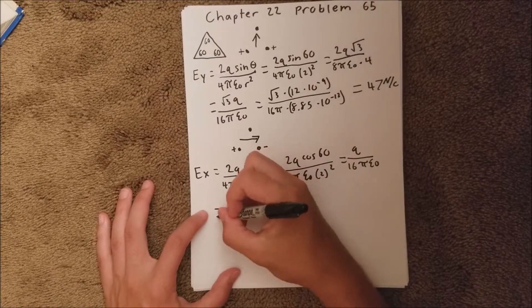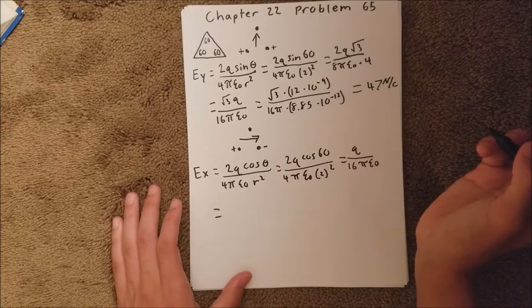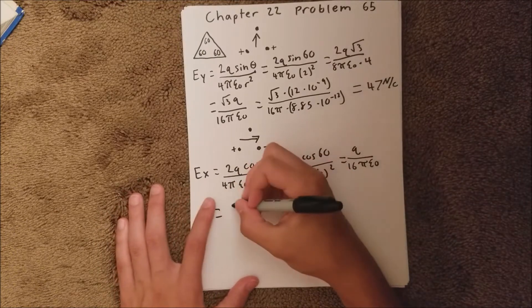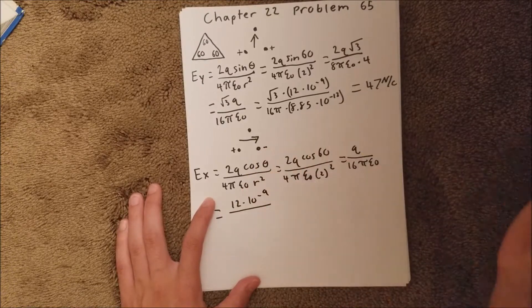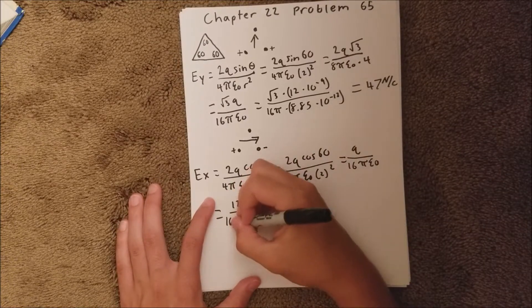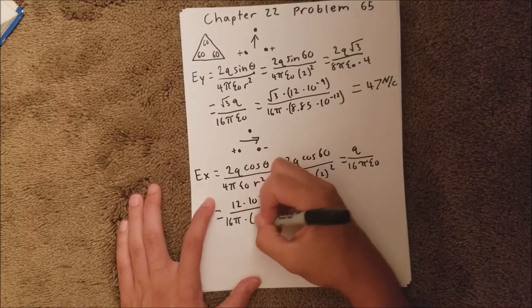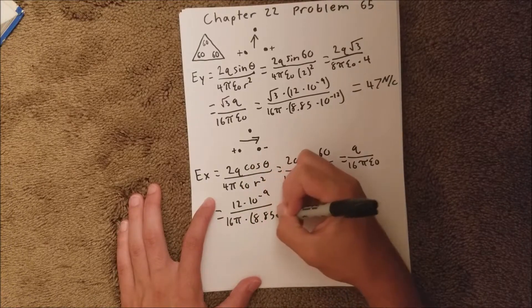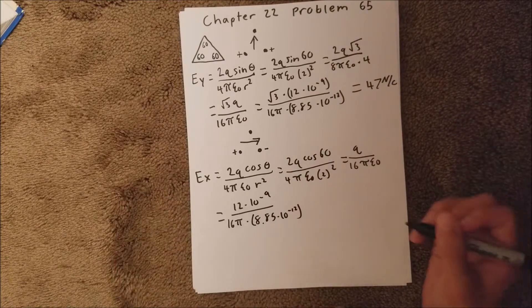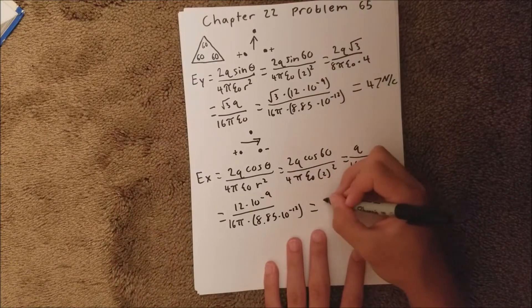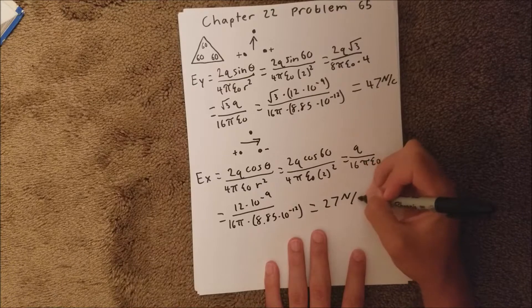And then that is equal to, same thing, 12 times 10 to the negative 9th over 16 pi times 8.85 times 10 to the negative 12th. And when you plug that into your calculator, you should get 27 newtons per coulomb.